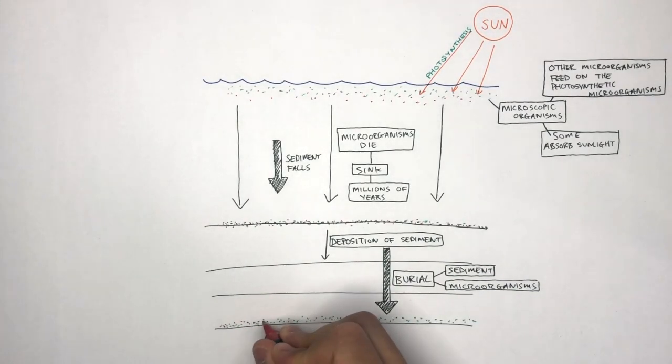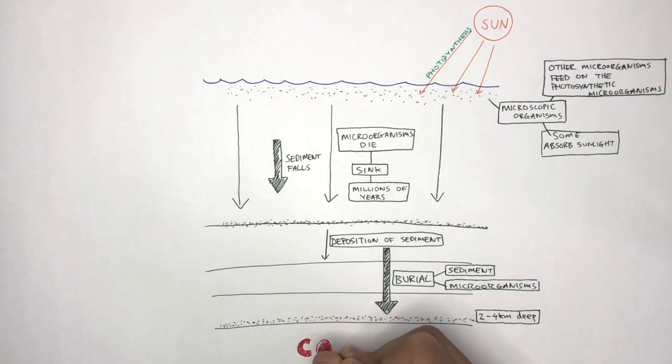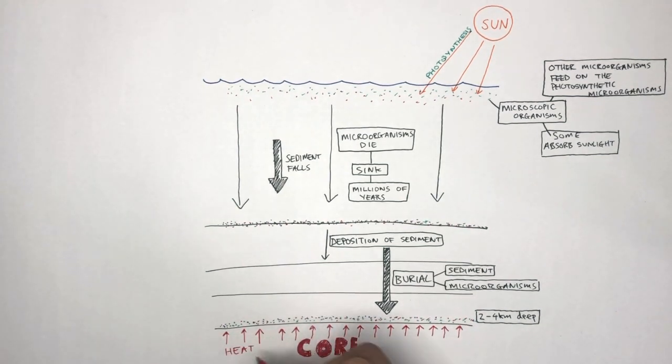As the microorganisms get buried to 2 to 4 kilometers deep, they get closer to the Earth's core, which is very hot. This provides a lot of heat, heating up the microorganisms.